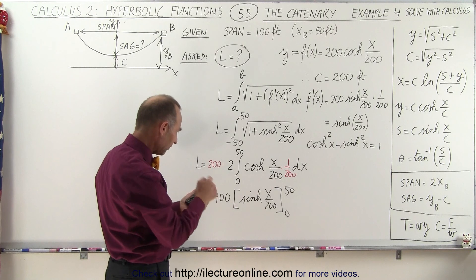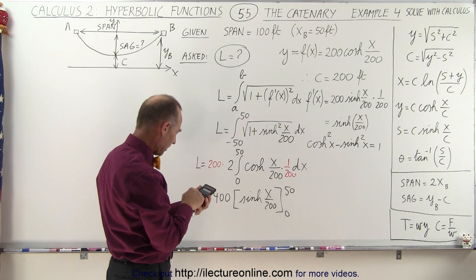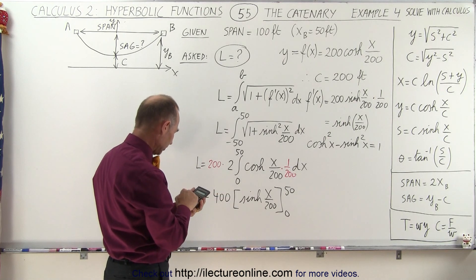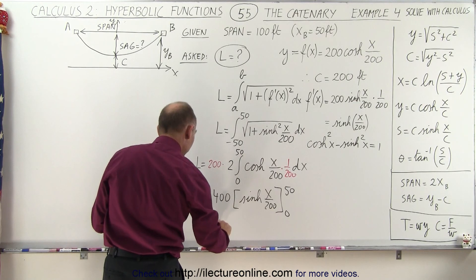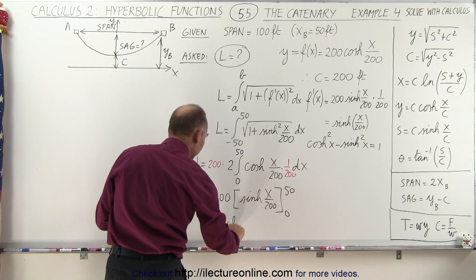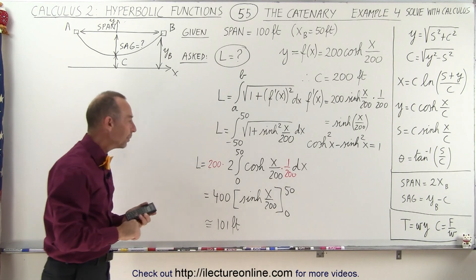We have 50 divided by 200, which is 0.25. Take the hyperbolic sine of that and multiply that times 400. And notice we get the same result as we got in the previous video, about 101 feet, which gives us the length of the cable.